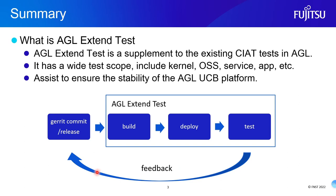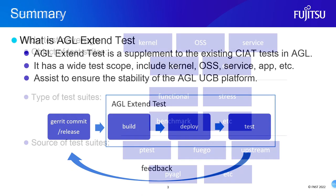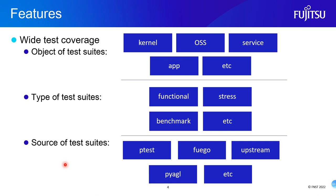Next, let's take a look at the features of Agile Extended Test. First, it has wide coverage. The test of a particular Agile Extended Test suite includes kernel, OSS, service, and app. The test types cover functional test, stress test, and benchmark test. Test suite sources include PE test, fuzz, upstream, etc.